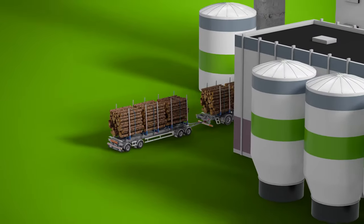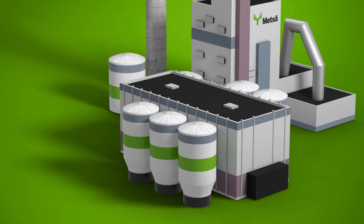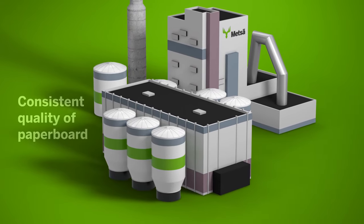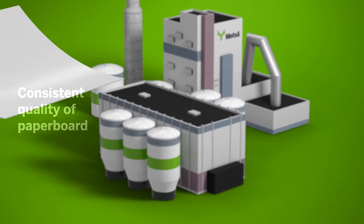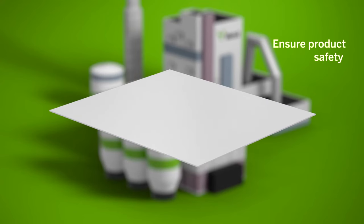We are fully self-sufficient when it comes to pulp. By only using our own pulp, we can guarantee the consistent quality of our paperboards. Unlike pulp made from recycled fibers, pulp made from fresh fibers is free from any contaminants, making it hygienic and safe for use in food packaging.